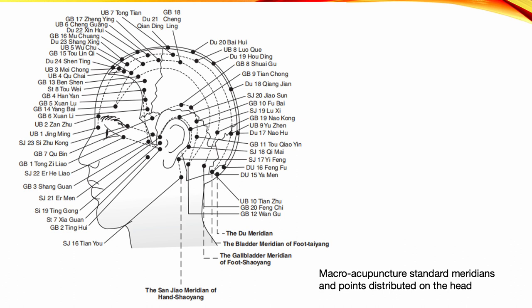Many meridians and points are distributed on the head, along with being the collection areas for the zangfu, qi, and blood. Therefore, stimulation of points on the head not only treats diseases of the head but also treats whole body disease associated with the function and meridian connection. This theory directed clinical research and practice until the 1950s as Sculpt Acupuncture therapy gradually developed. Sculpt Acupuncture is a further development of traditional Chinese medicine.